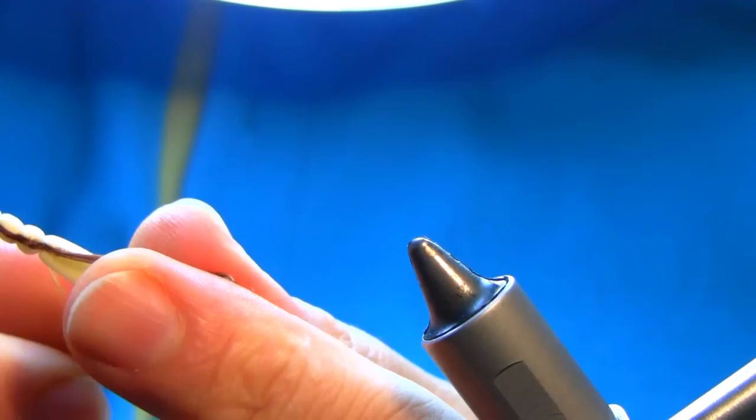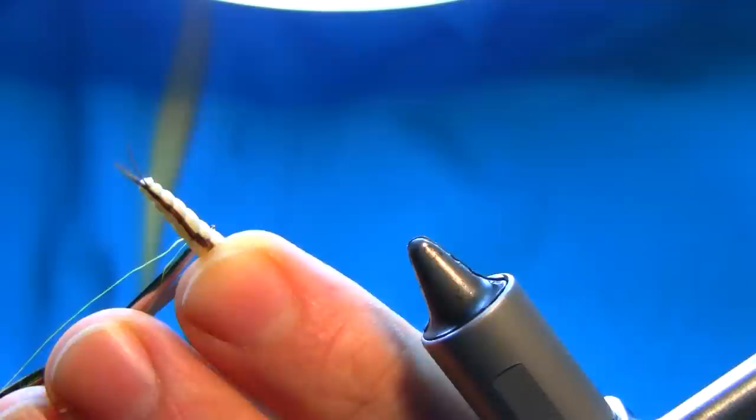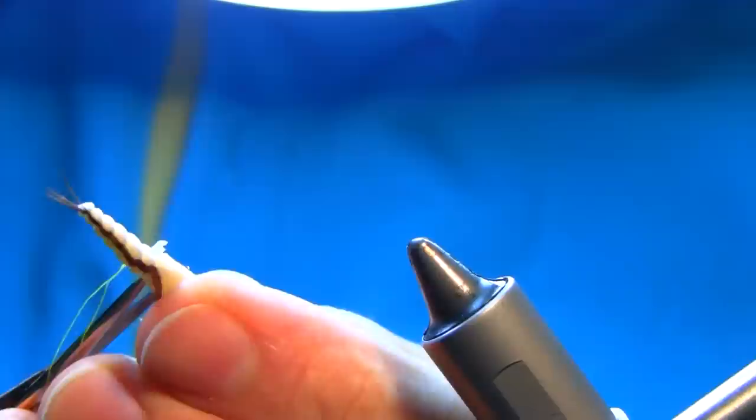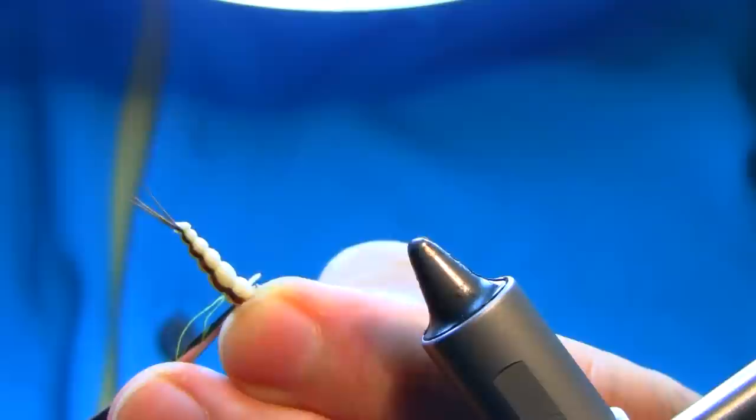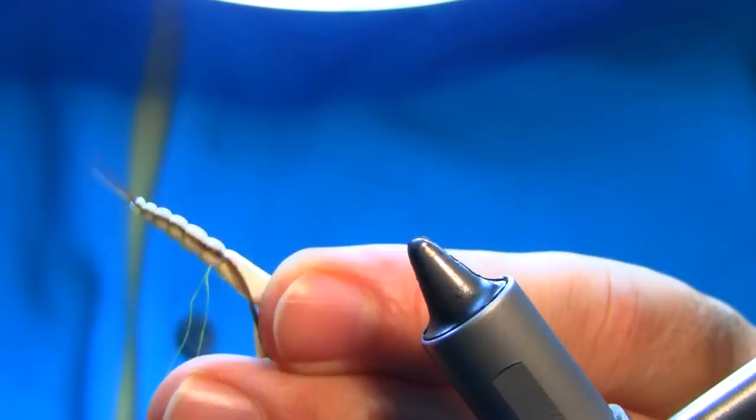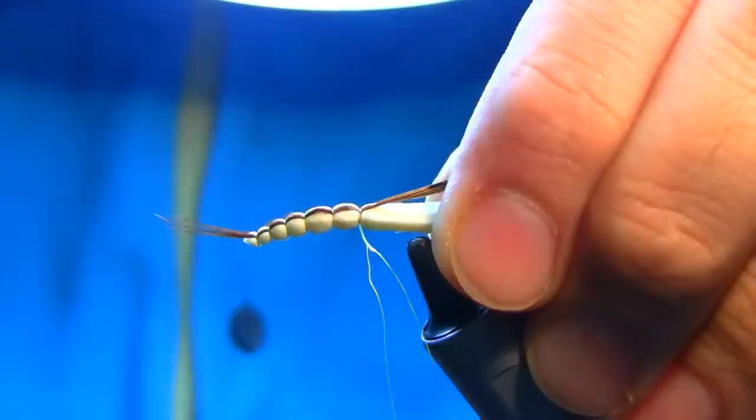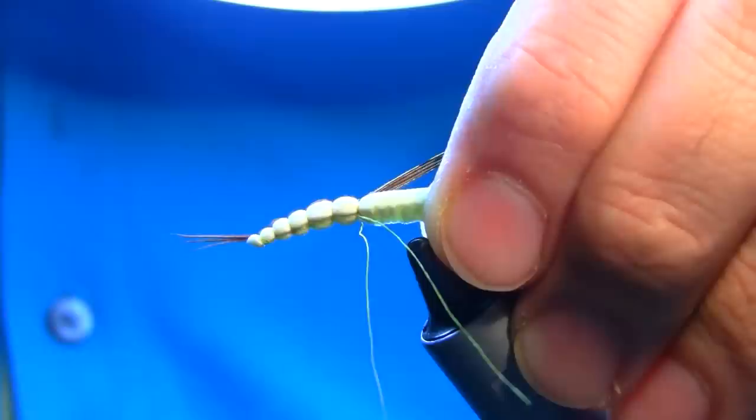Now I'll take this needle off and underneath where the thorax is gonna be, I'm just gonna trim it down, make it a bit thinner so you don't have a very bulky thorax. This is stage one to create a body.